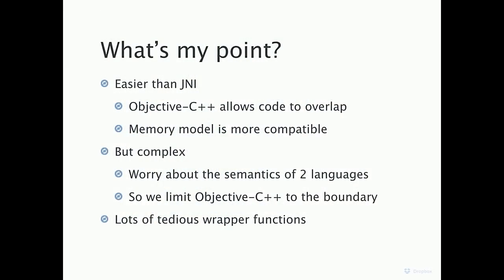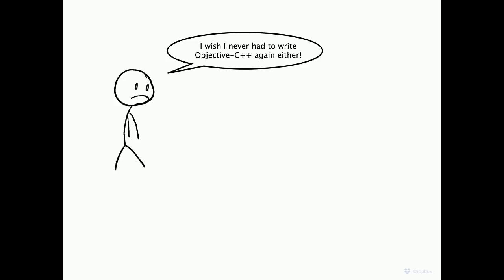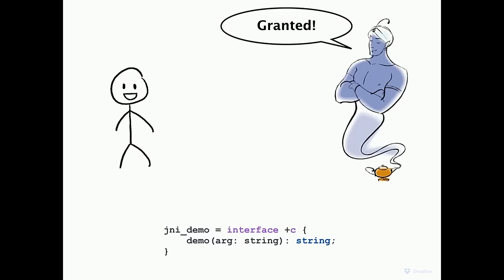Even though Objective-C++ is less painful than JNI, you're still writing wrapper functions — lots of them, with details you don't want to miss. I really wished I didn't have to write Objective-C++ again for this purpose either. Fortunately, I can use the same Djinni interface for Objective-C as well.